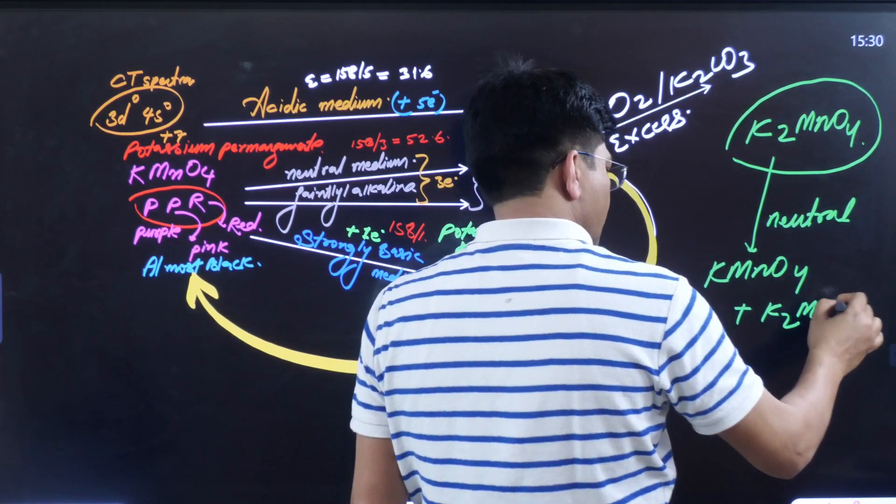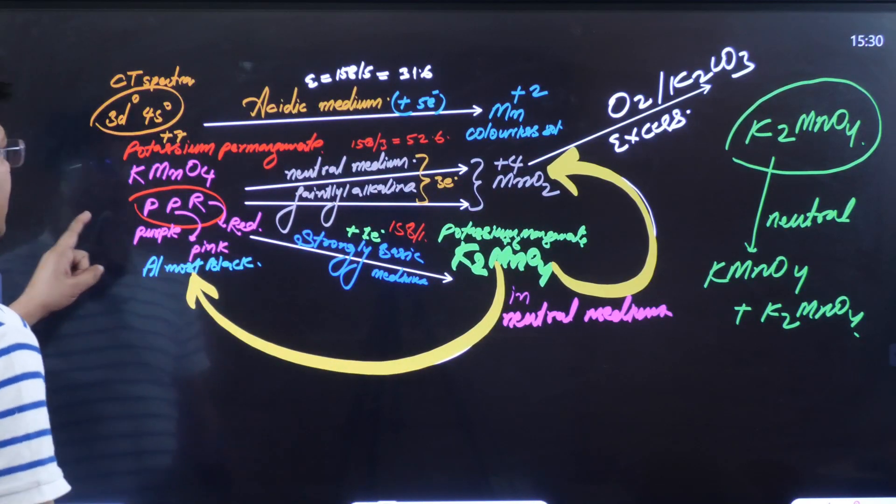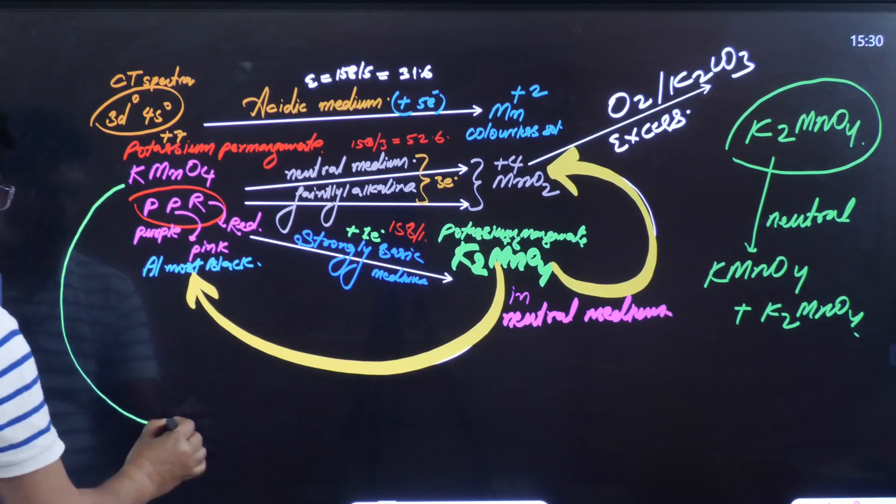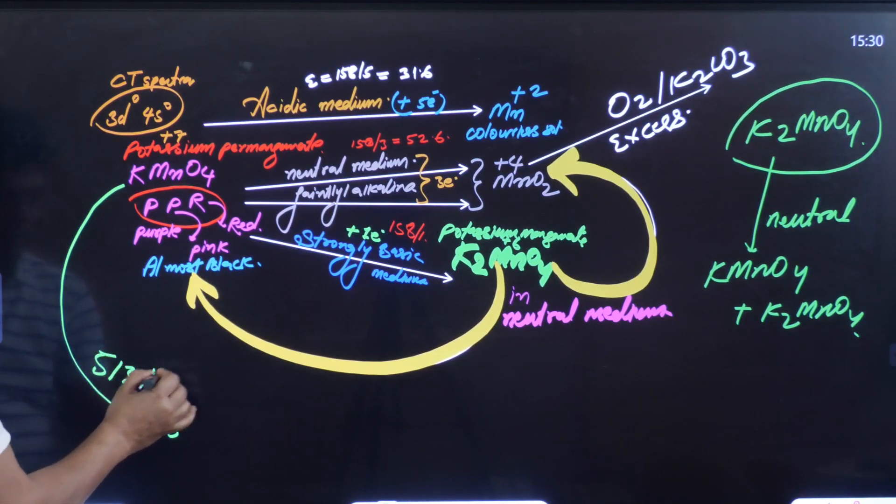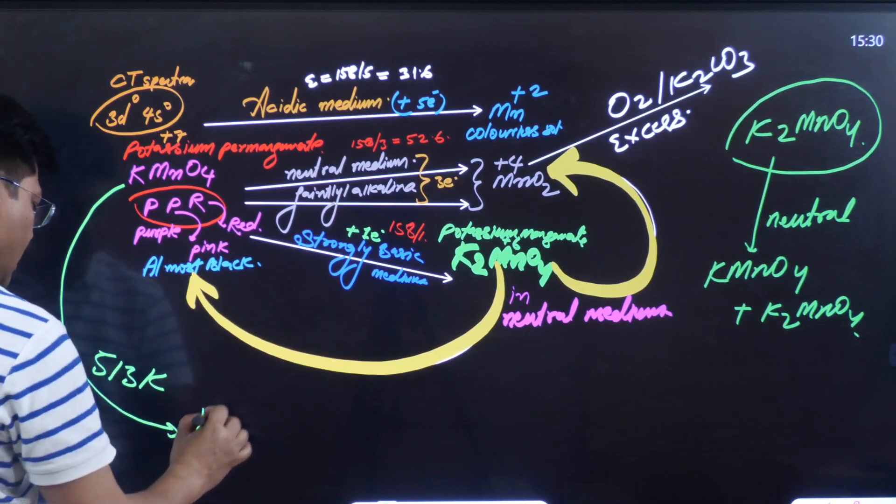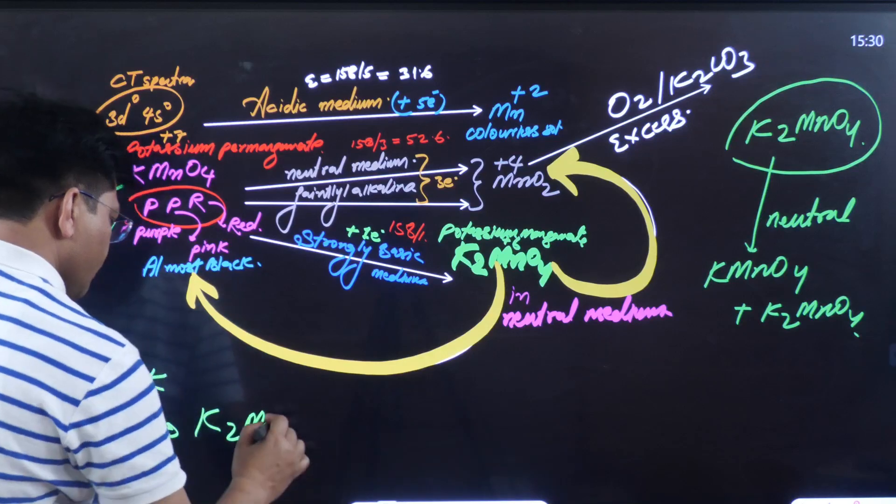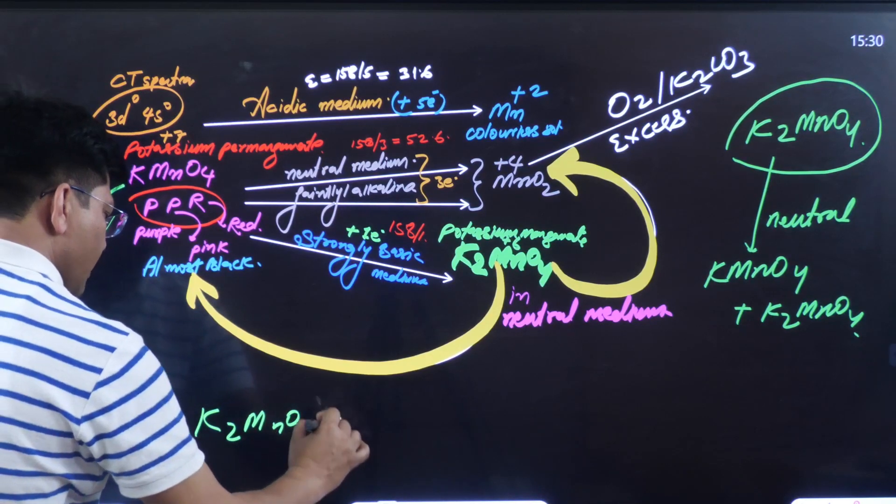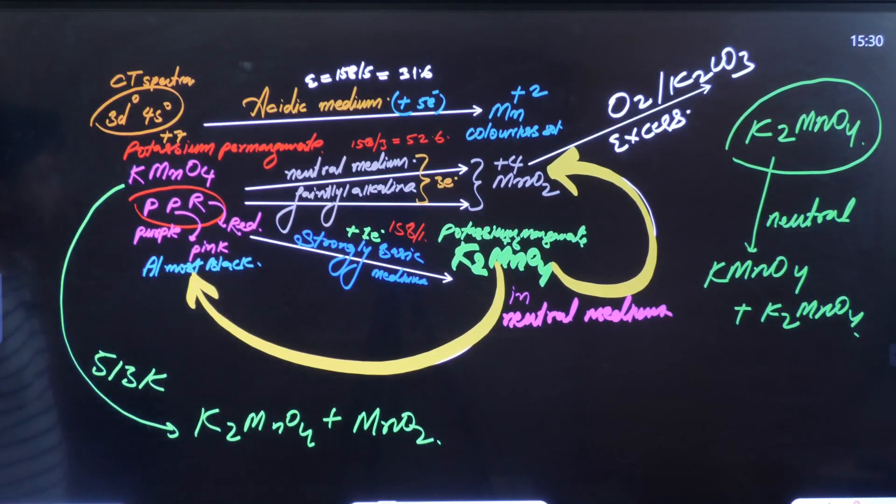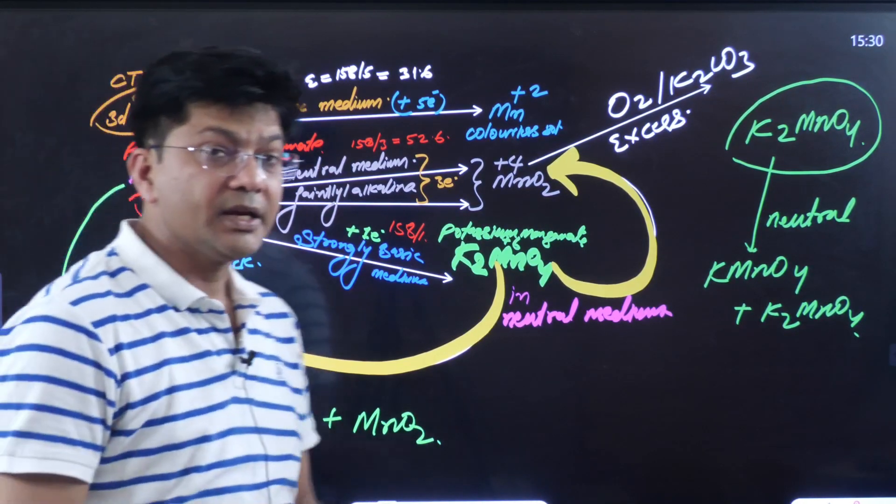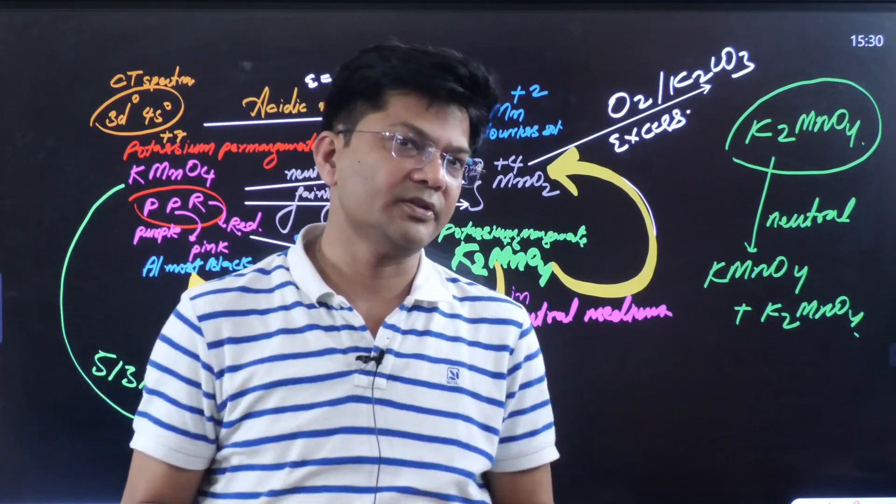Now if I react this K₂MnO₄ in neutral medium, I will get KMnO4. This is really very important. And one more thing: if you heat this KMnO4 at 513 Kelvin, 513 Kelvin, then you will get K₂MnO₄ plus black colored powder MnO₂. So these are inter-conversions - what we get from what.